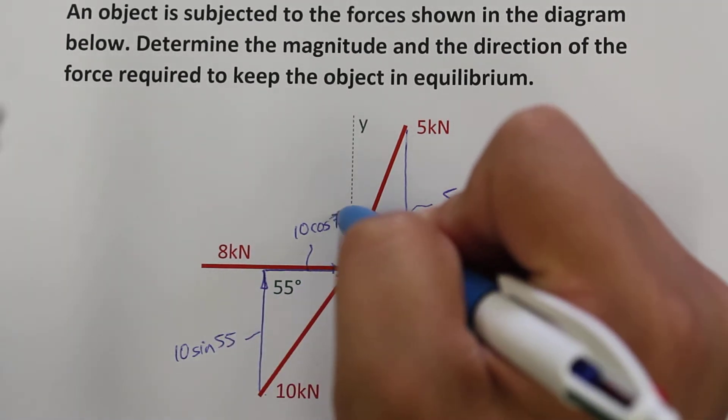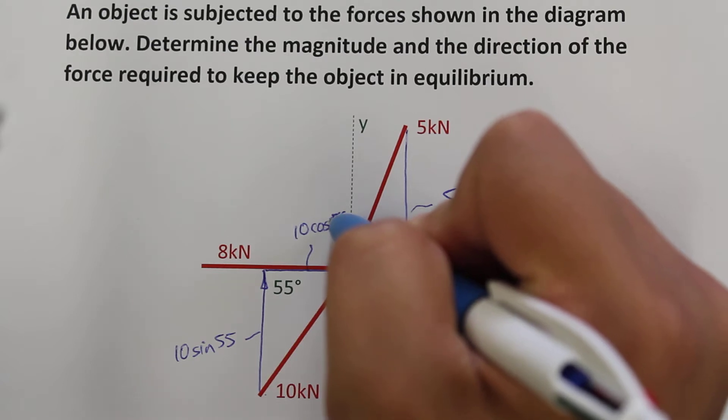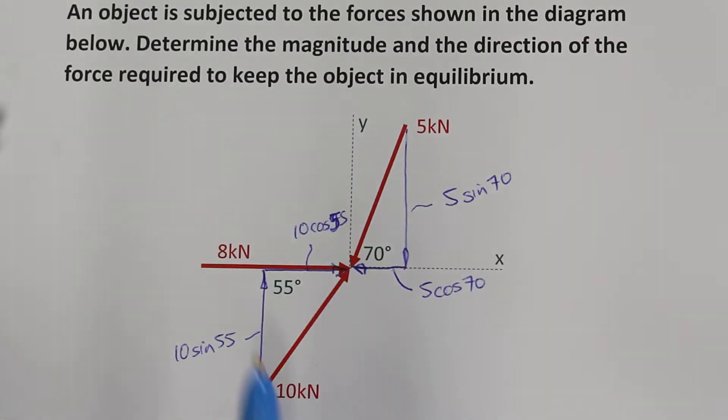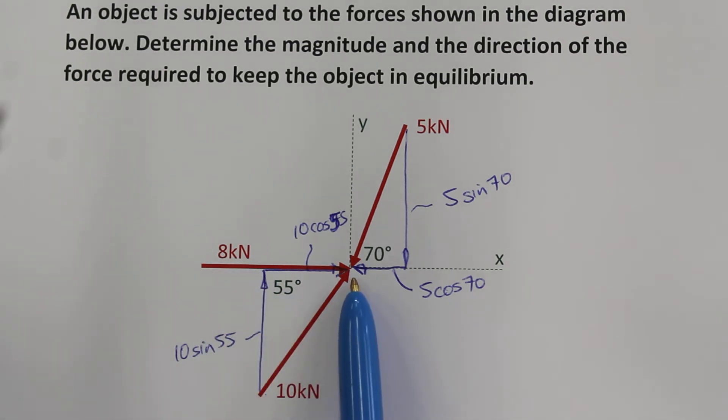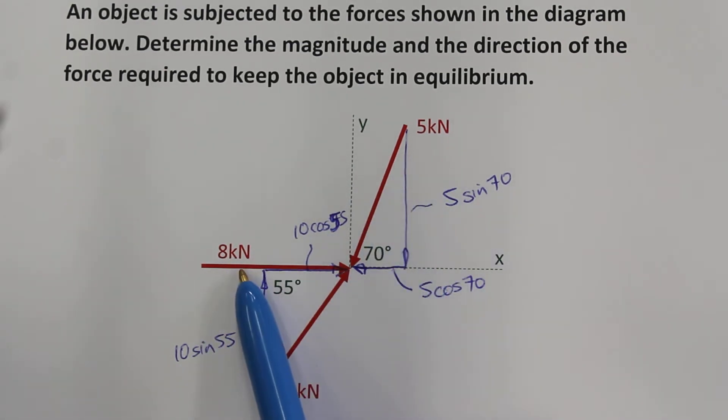Sorry, that should be 55 as well. The 8kN force is completely in the x direction so we do not need to break that down further.